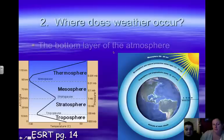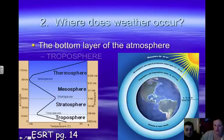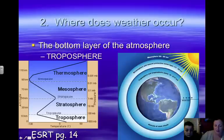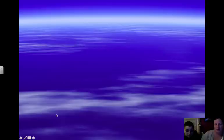So where does weather occur? The bottom layer of the atmosphere, which we know is the troposphere, is the layer in which we live. We all remember this chart on the bottom of page, the top of page 14 in the reference table.